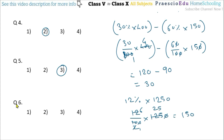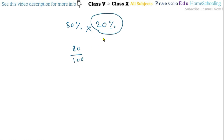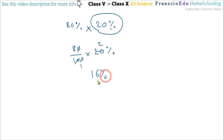Question number 6: What percent is 80% of 20%? We keep 20% as it is and take 80% of it: 80 divided by 100 multiplied by 20%. After cancelling zeros, 8 multiplied by 2 equals 16. So the answer is 16%, given in option number 2.